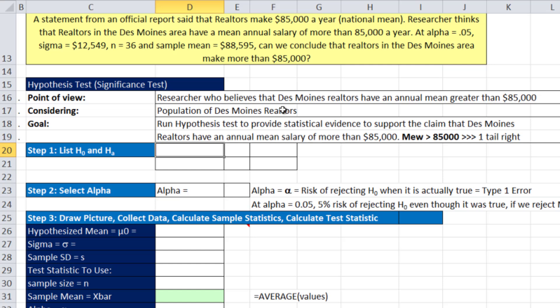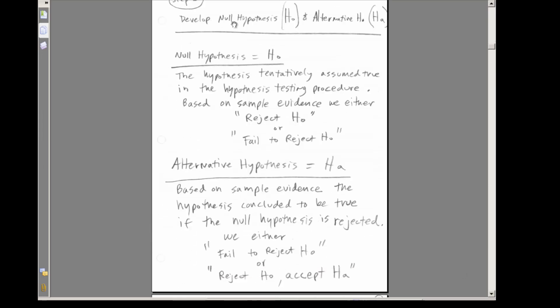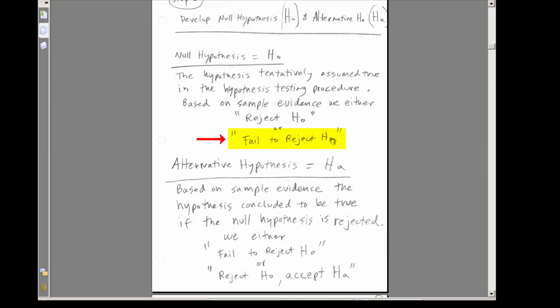If you have mu greater than $85,000, the arrow pointing this way tells you it's a one-tailed test to the right. Now, Step 1: develop the null hypothesis H-sub-0 and the alternative hypothesis H-sub-A. The null hypothesis is tentatively assumed true in the testing procedure. Based on sample evidence, we either reject H-sub-0 or fail to reject H-sub-0. The alternative hypothesis H-sub-A is concluded to be true if the null is rejected.